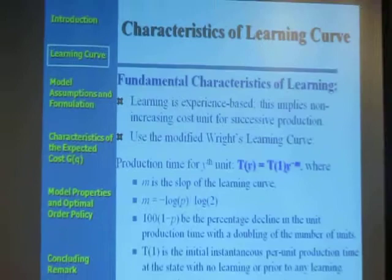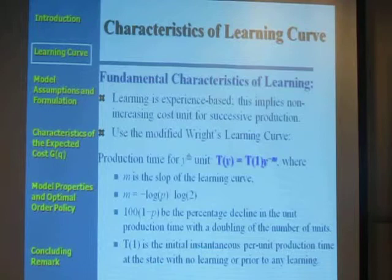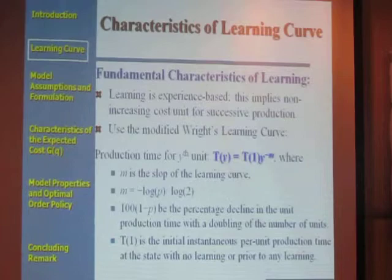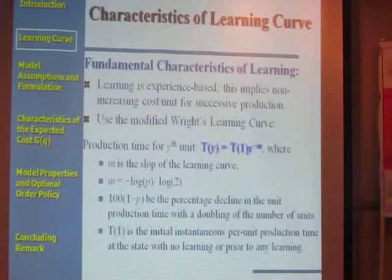Part of the model is the learning curve. We assume that learning is experience-based — as the worker produces more and more, they are able to perform faster. So for successive productions, the per-unit production cost is not increasing. The learning curve we use is the Wright learning curve, which is a famous and widely-used model. T(Y) is the per-unit production cost for the Y-th unit.